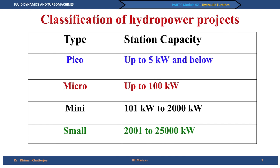In India, pico hydro power projects produce 5 kilowatts or below — basically used for systems where you produce power locally and use it, not really for transmission to the grid. Micro hydro power projects go up to 100 kilowatts. Between 101 kilowatts and 2 megawatts we have mini hydro power projects. Above 2 megawatts and up to 25 megawatts is the small hydro power category, and above that we have large hydro power stations.